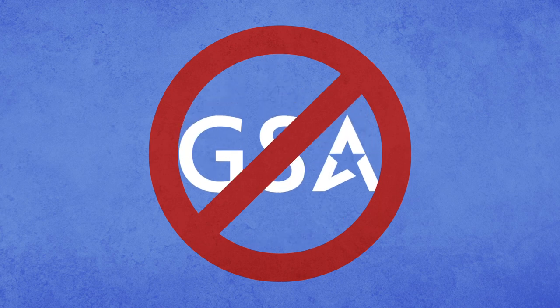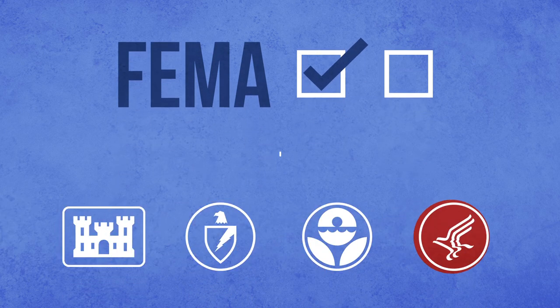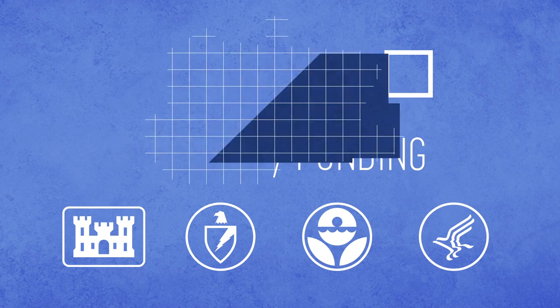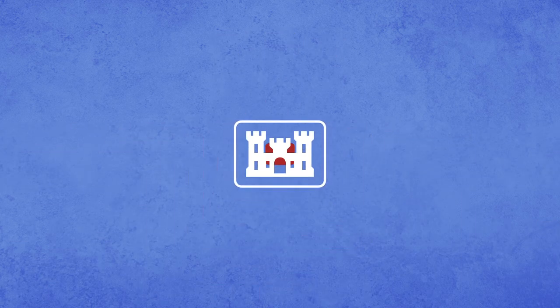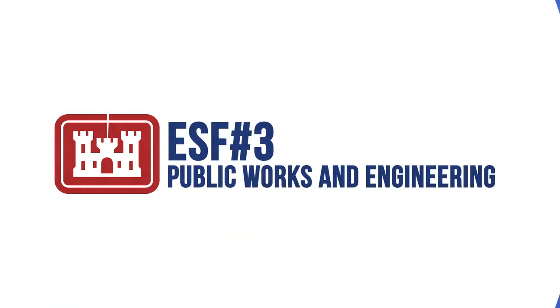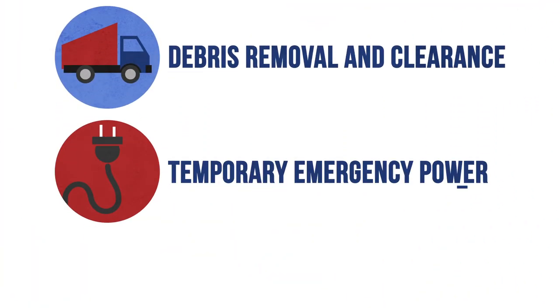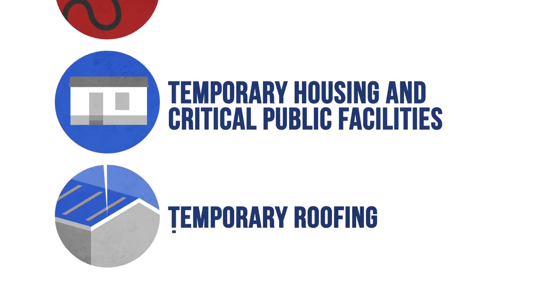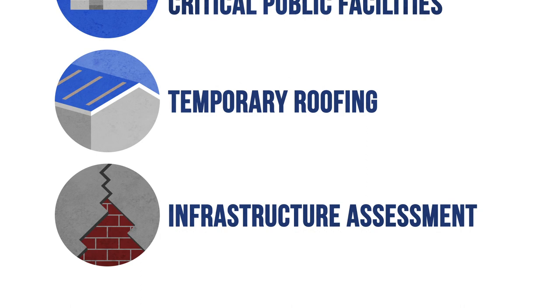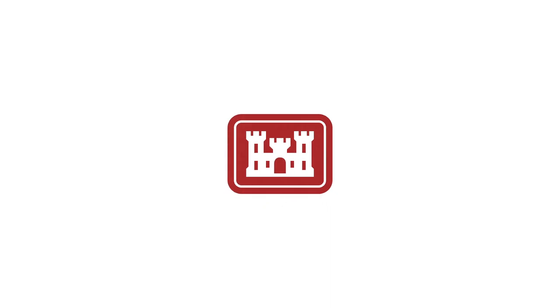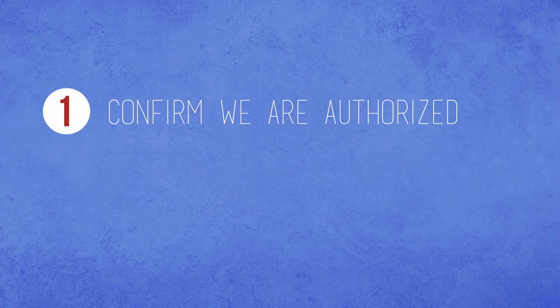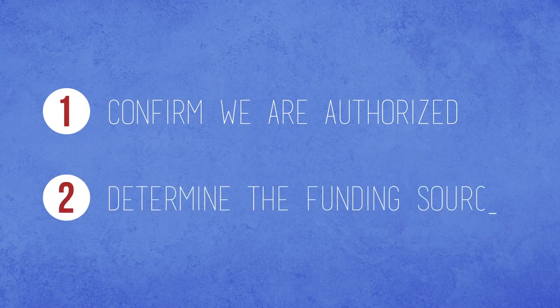No other federal agency may accept a request for assistance. FEMA accepts or denies the request, and if FEMA accepts, FEMA determines the federal agency to which the direction and funding will be given to provide assistance. Under the NRF, the federal agencies are grouped into Emergency Support Functions, or ESFs. The Corps of Engineers is the lead agency for ESF III, Public Works and Engineering, and its mission sets include debris removal and clearance, temporary emergency power, temporary housing and critical public facilities, temporary roofing, and infrastructure assessment. The Corps also lends trained personnel to support other ESFs, such as ESF IX Search and Rescue, when activated. Ensuring under which specific authority the Corps is responding in a given event is vital in order to confirm we are authorized to carry out a specific activity and determine the appropriate funding source.